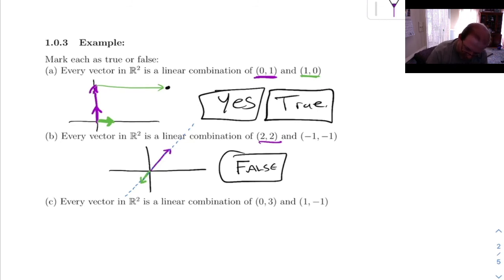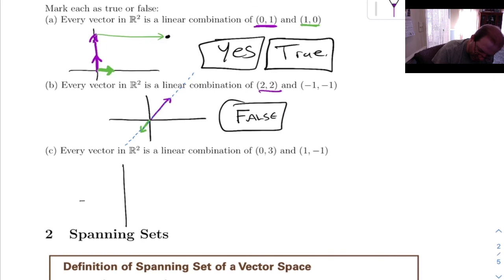What about this last one? Every vector in R2 is a linear combination of (0, 3) and (1, -1). I'm going to do the same sort of thing here. (0, 3) is pointing up to the number 3 on the y-axis. And then (1, -1) goes over to 1 and down to -1. So that's going to be this vector here. Can we get anything in the plane by taking linear combinations of those guys? Sure, we can. If you wanted to get say this point right here, what you do is you take this and you stretch it up until you get to a point where you could go down and hit this. The important thing there is they don't lie on the same line and therefore you can get anything you want in the plane.